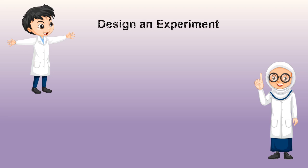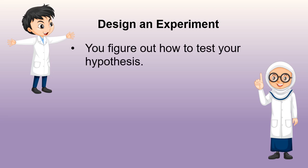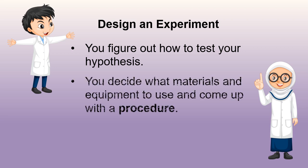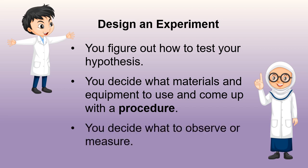So you've asked your question and made your prediction. Now you have to set up or design an experiment to test your hypothesis. Designing an experiment includes coming up with a procedure. If you're not sure what a procedure is, it's basically like a recipe for the experiment. It's a set of step-by-step instructions that you follow when you do the experiment. At this point, you also need to decide what you are going to observe or measure when you do the experiment.